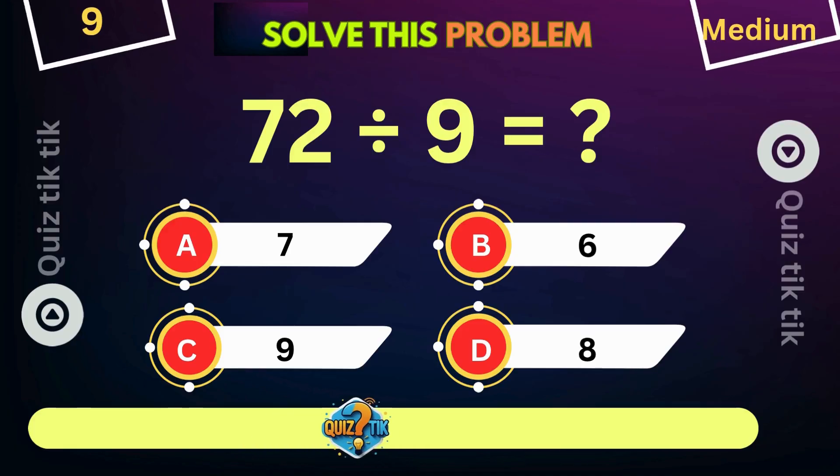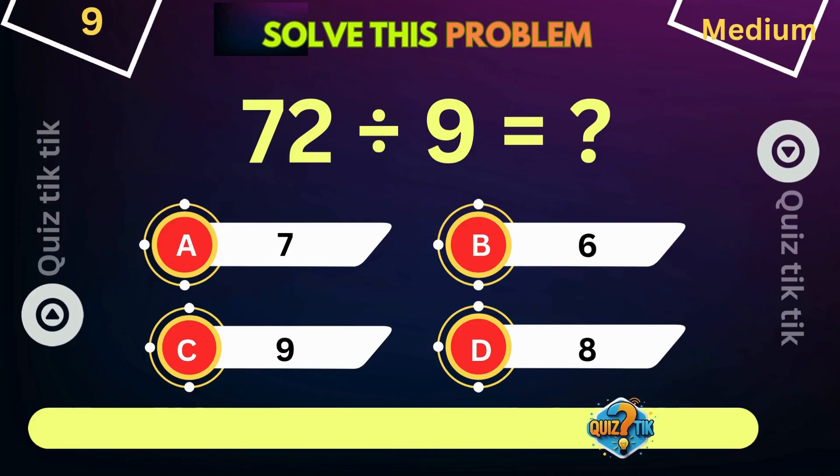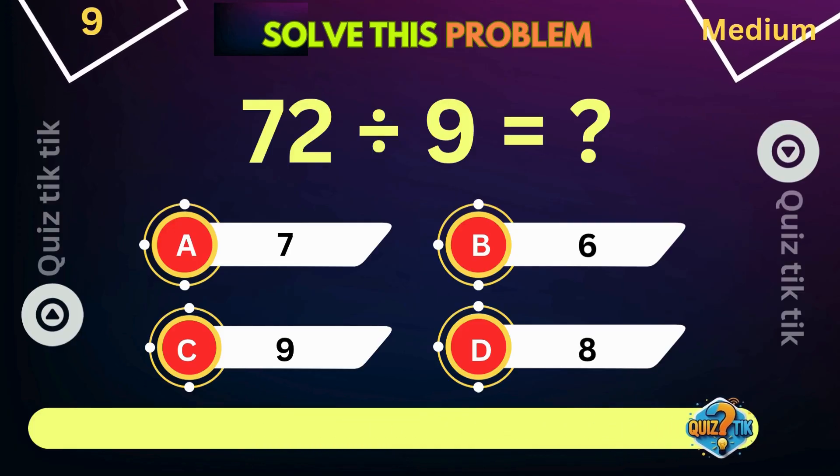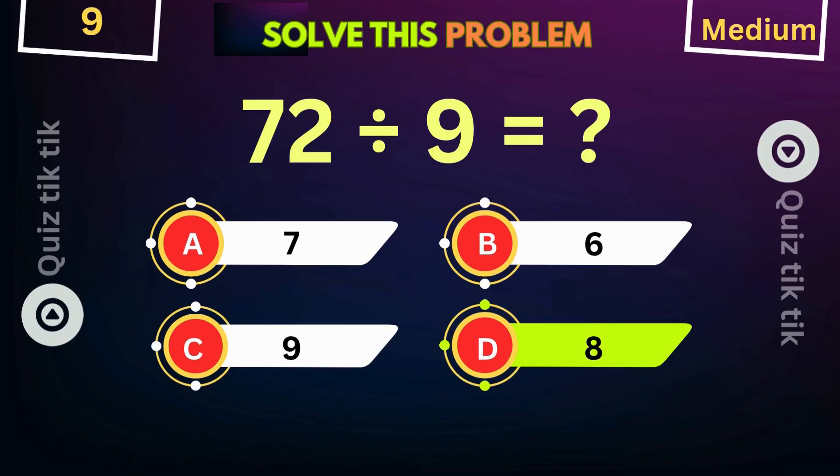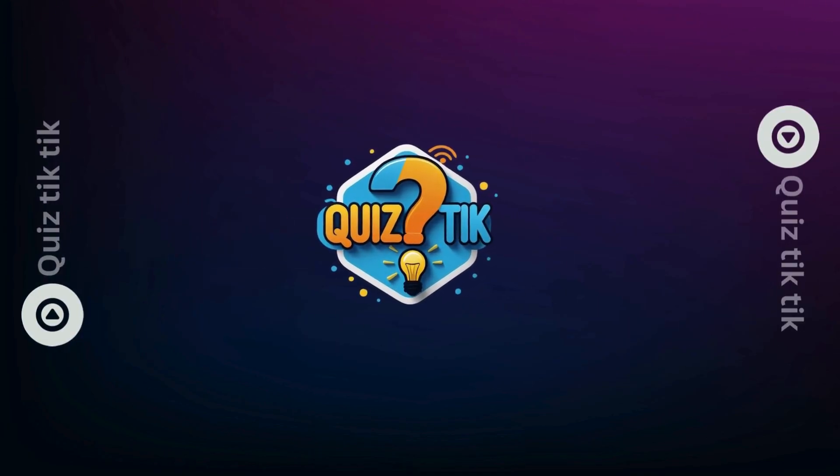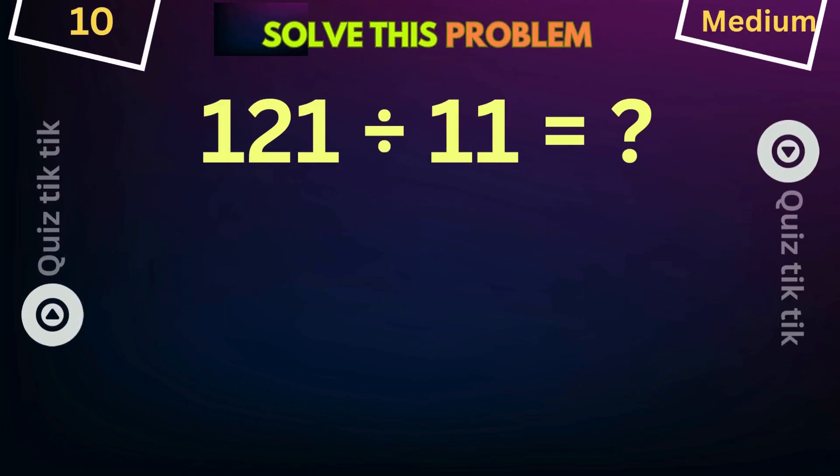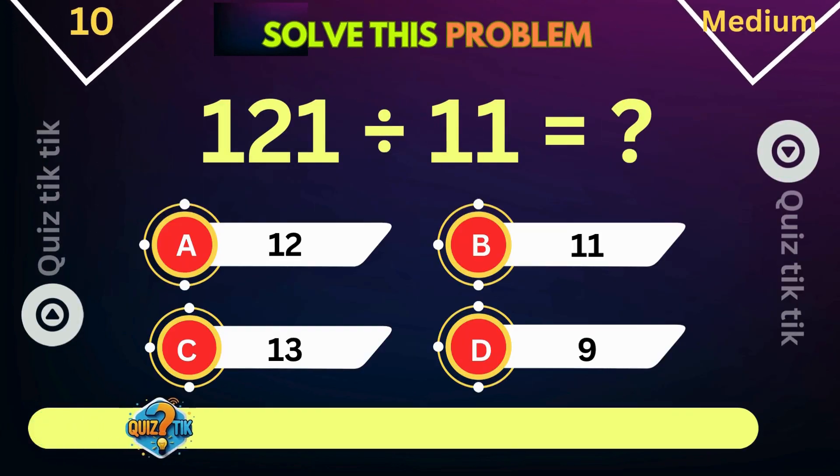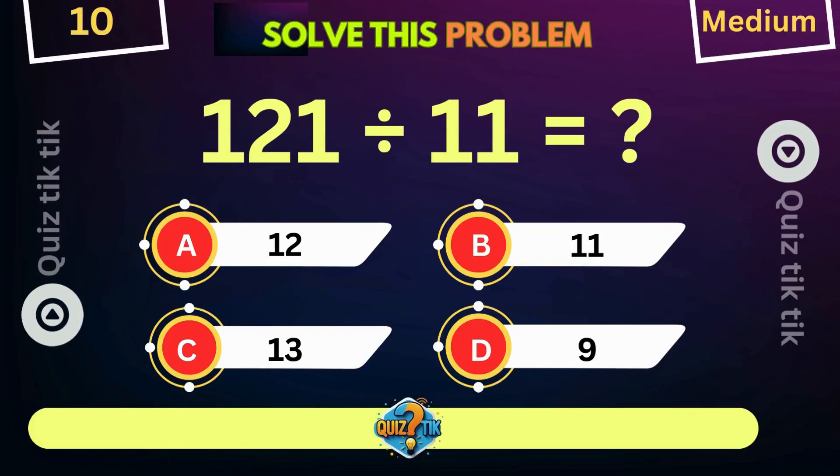72 divided by 9 is equal to. 121 divided by 11 is equal to.